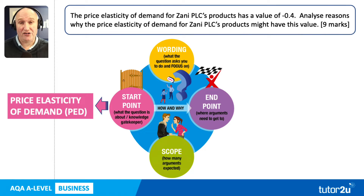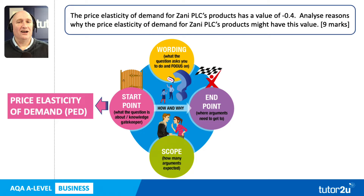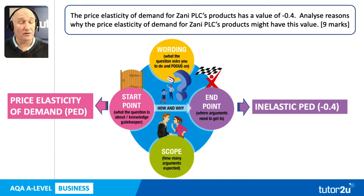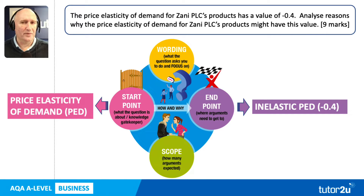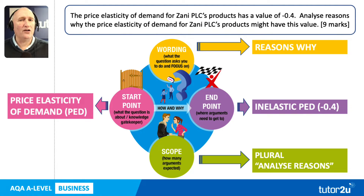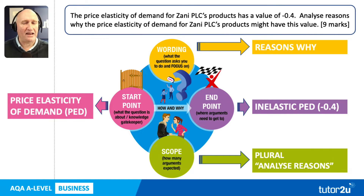Clearly this question is about price elasticity of demand, or PED — so use PED rather than writing out the long words. The question is asking why, in terms of what the business does, what it sells, who its customers are. Why might the elasticity number be minus 0.4, which is basically inelastic demand? A percentage change in price would produce a lower percentage change in quantity demanded. We're looking for two reasons here, focusing on this inelastic demand.